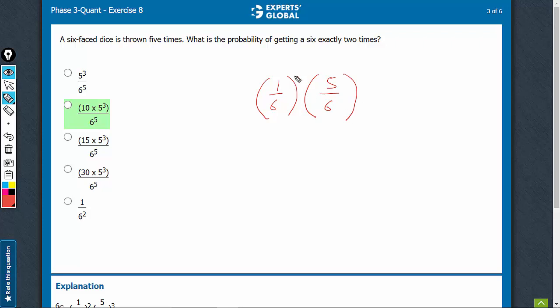We want this event to happen 2 times, and we want this event to happen 3 times. Out of 5 throws, which 2 times will this happen, or which 3 times will this happen?